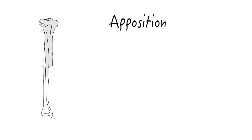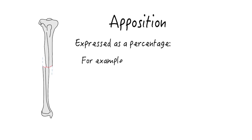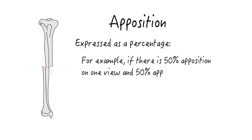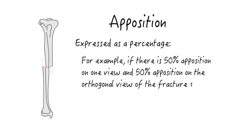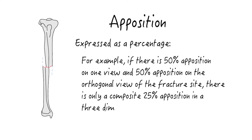Apposition refers to how much of the surface area of the fracture site is in alignment. The amount of misalignment at the fracture site is the degree of displacement, which can be expressed as a percentage. For example, if there is 50% apposition on one view and 50% apposition on the orthogonal view, there is only a composite 25% apposition in a three-dimensional sense.